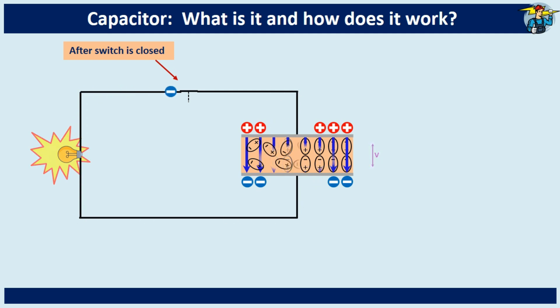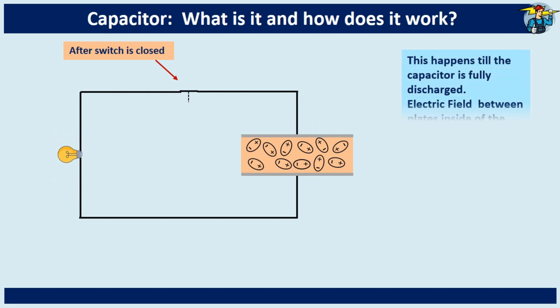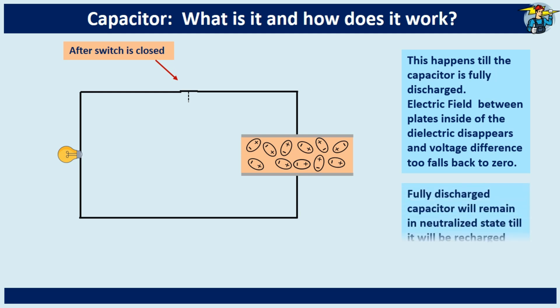Electric field between the plates inside of the dielectric starts to fade away now, and the voltage difference too falls back to zero. The brightness of the bulb will also dim down to zero level. This happens until the capacitor is completely discharged. A fully discharged capacitor will remain in neutralized state till it is recharged again.